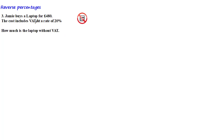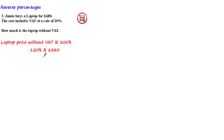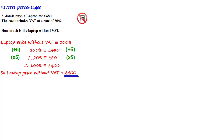Since we're told that the cost of £480 includes the VAT, this is the value of the laptop after the 20% increase was applied to the original amount. To work out how much the laptop is without VAT, we need to find the price before this 20% increase. Using the proportion method: the laptop price without VAT is equivalent to 100%, and given the cost was £480 after a 20% increase, we say 120% is equivalent to £480. Dividing both sides by 6 gives 20% equivalent to £80, and multiplying by 5 gives 100% equivalent to £400. So the laptop price without VAT is £400.